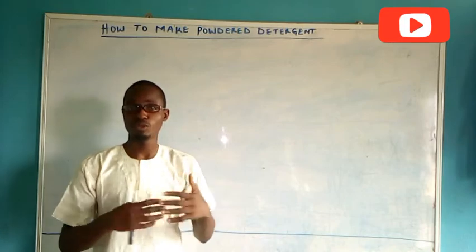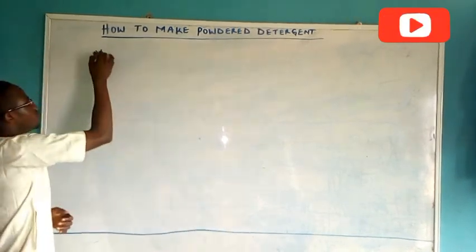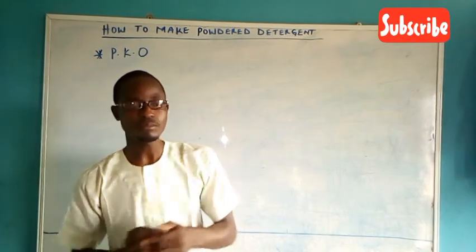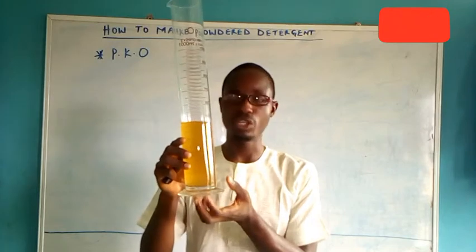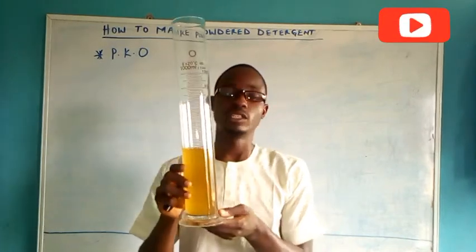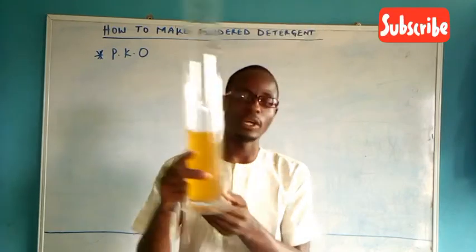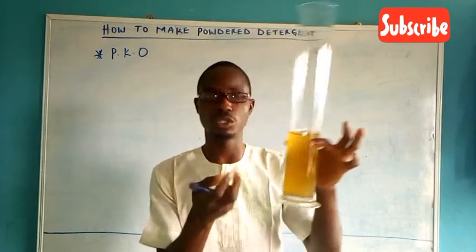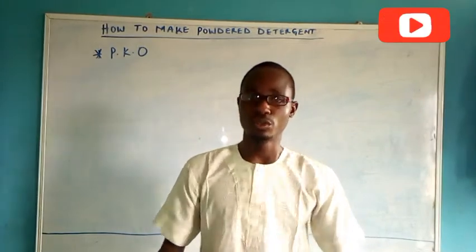Firstly, I will introduce all the chemicals or materials involved in the production. We have number one, which is PKO. The full meaning of PKO is Palm Kernel Oil. It's an oil. This is the material — this is the PKO. It has a characteristic color, a little bit brown. It's an oil, and if you want to get the original one, it is available locally here in Nigeria. If you want to identify the original one, it's normally congealed just like palm oil. So that is how to identify the original one.